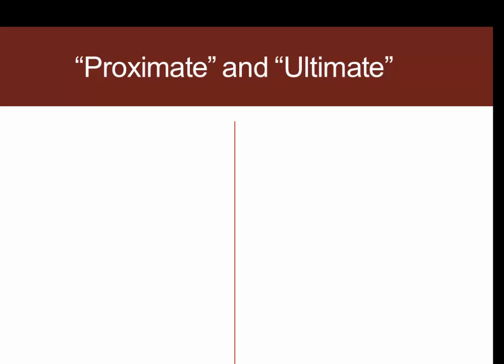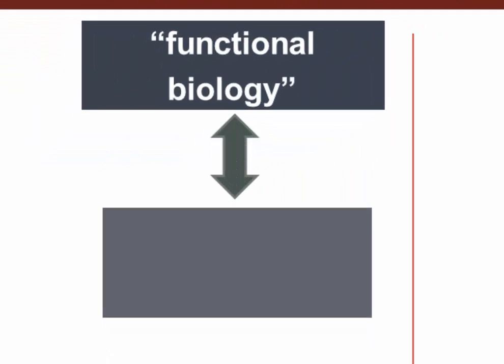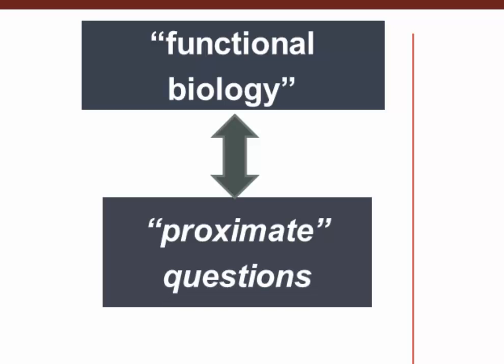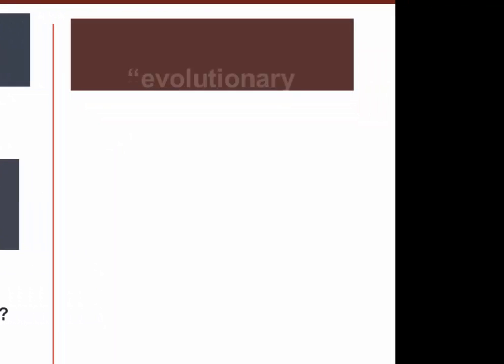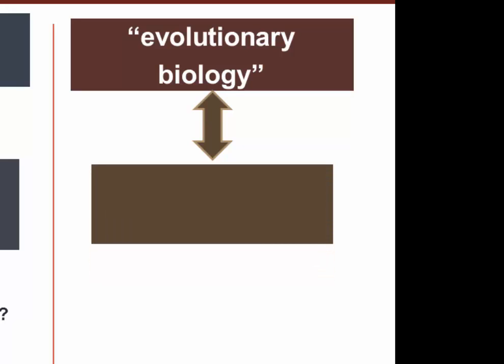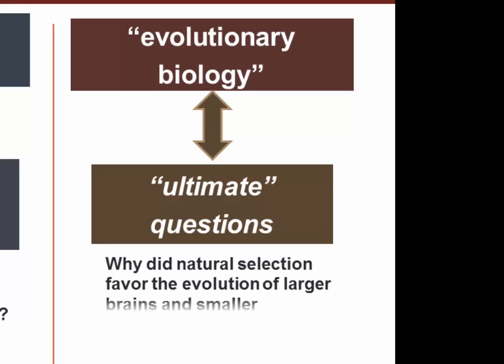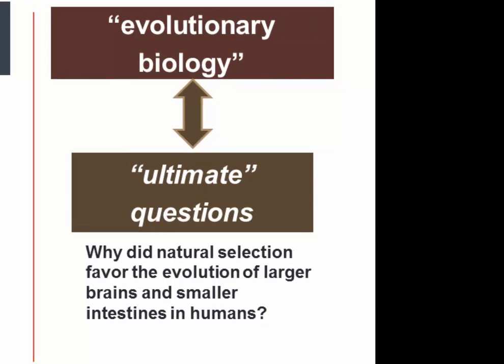The key is not just the distinction between the words 'how' and 'why' — the key is the distinction between functional biology and evolutionary biology. The terms Mayr used for this were proximate and ultimate. Functional biology is all about providing proximate explanations and identifying proximate causes; for example, 'how do our hearts circulate blood to our brains and intestines?' Ultimate questions concern evolutionary biology — for example, 'why did natural selection favor the evolution of larger brains and smaller intestines in humans?'